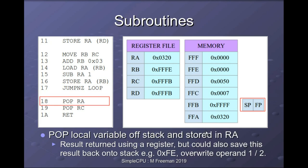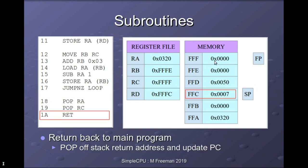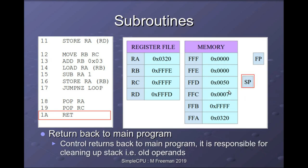At this point our local variable holds the multiplication result. We pop it off the stack into a register, then increment the stack pointer to free up that memory location. Next we restore the old frame pointer by popping it off the stack, moving the frame pointer back up to the top of memory. Finally we execute the return instruction: the stack pointer is pointing to the return address, so the return instruction reads that from memory, updates the program counter, and increments the stack pointer to free up that location.